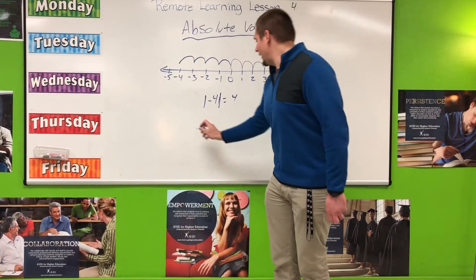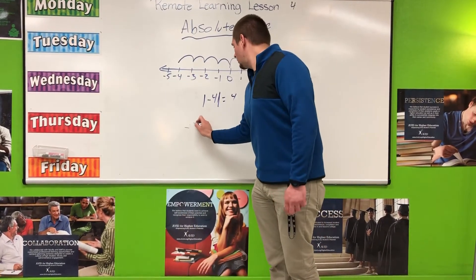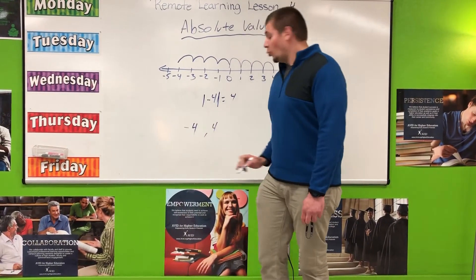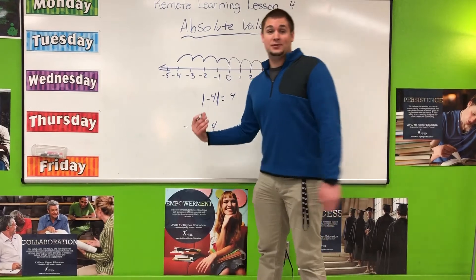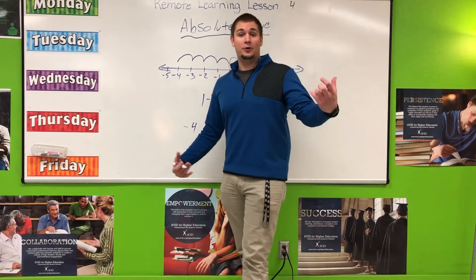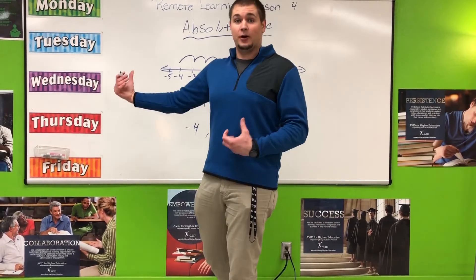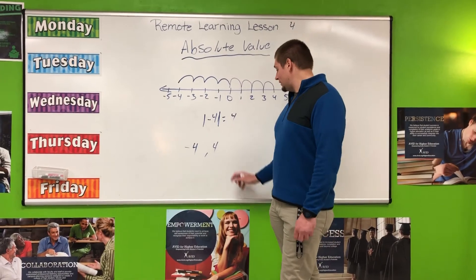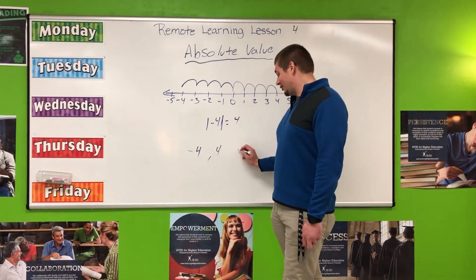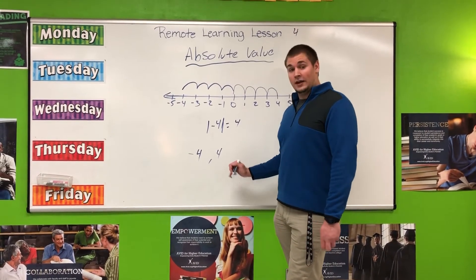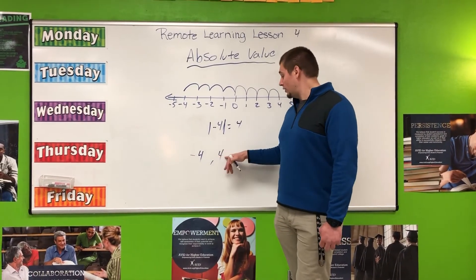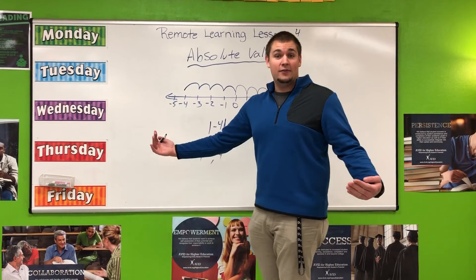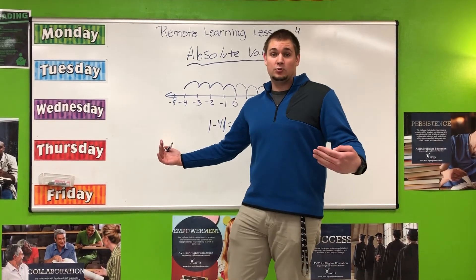If you look at negative four and four, we call these opposites, just like your left foot is to your right foot. Opposites — negative four and four will always equal zero. Negative four plus four equals zero. Negative five plus five is equal to zero as well.